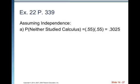All right. The probability that neither studied calculus would be the probability that the first person randomly chosen never studied calculus and the probability that the second randomly person never studied calculus. So it would be 0.55 times 0.55, which is 0.3025.